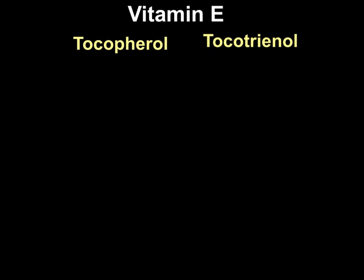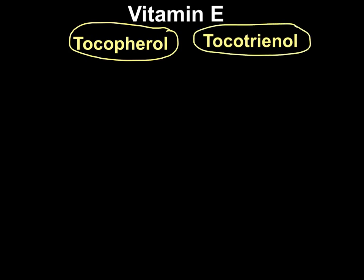Hello everyone, Dr. Mungle here. Today I'm going to do a high-yield review on vitamin E. Vitamin E is collectively referred to as two molecules: tocopherol and tocotrienol. The tocopherols are more common, and there are four types: alpha tocopherol, beta tocopherol, gamma tocopherol, and delta tocopherol.